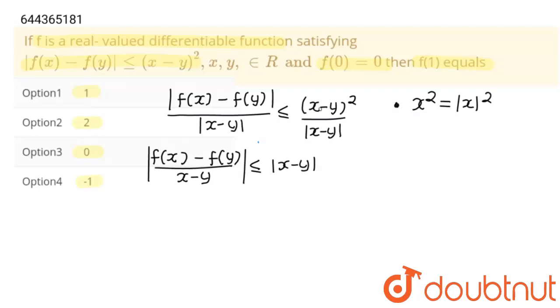So this will be |x - y|² which becomes |x - y|. This will become 0.